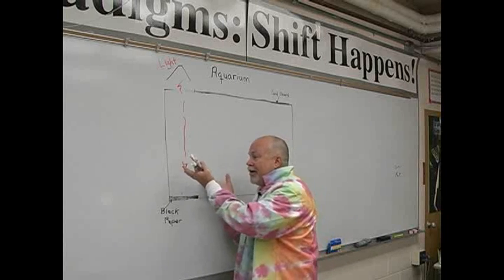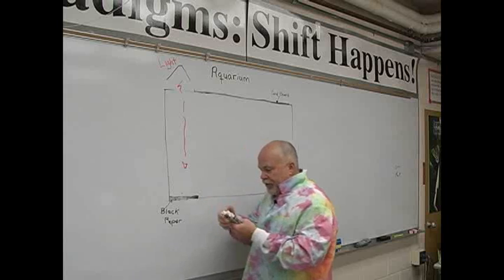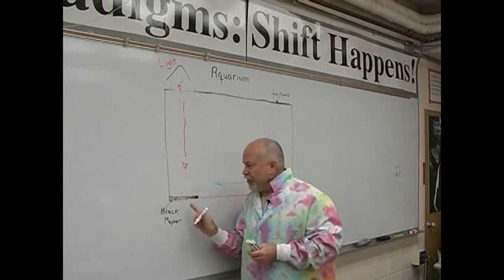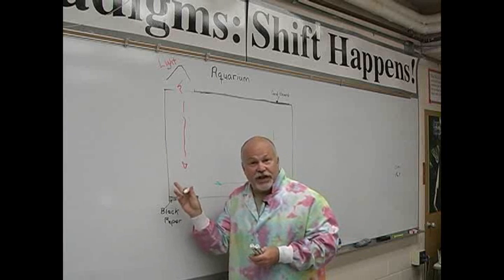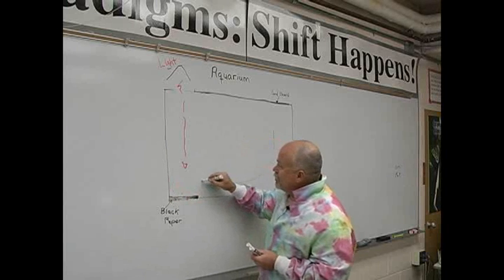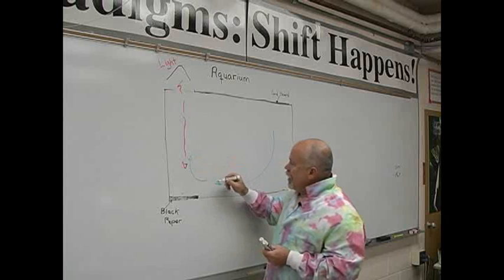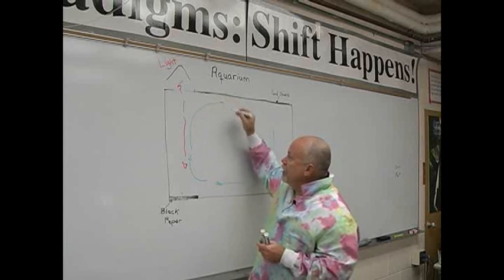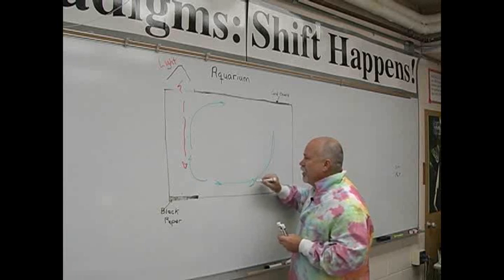But what happens when the cold air comes in and it starts moving in like this? Now it's in contact with this warm thing, it starts getting warmer. So it starts to get pushed up. And so we end up with hot air rising and the cold air falling to take its place.